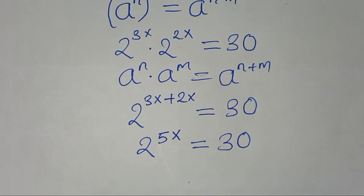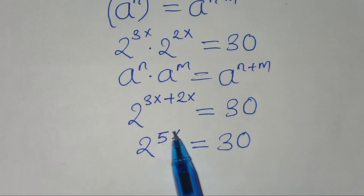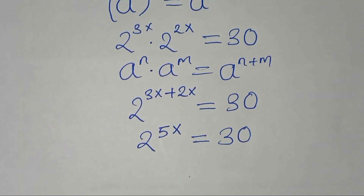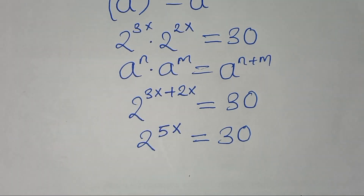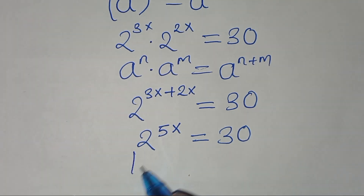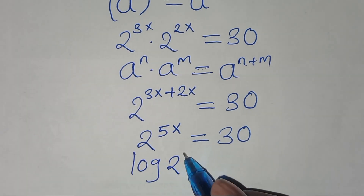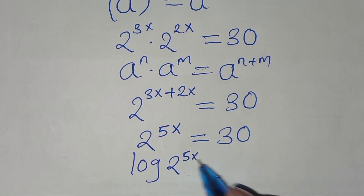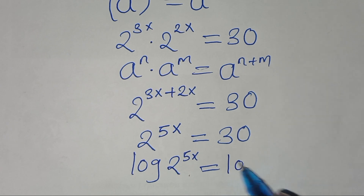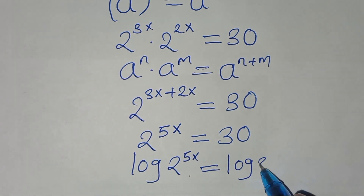The next step: to solve for x, we introduce logarithm on both sides, so that we have log of 2 to the power 5x equals log 30.